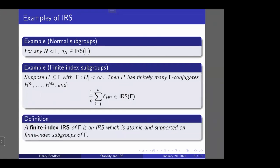Slightly generalizing this — and this will be very important in the talk — I'll call an IRS of gamma a finite index IRS if it's an atomic measure supported on finite index subgroups. The ergodic finite index IRS's are precisely the IRS's coming from the example above: the uniform measure on the conjugacy class of a finite index subgroup. A general finite index IRS will be a potentially infinite convex combination of such IRS's. In particular, they need not be finitely supported.